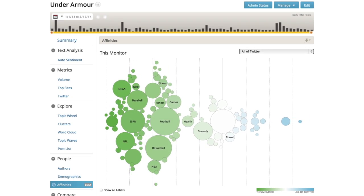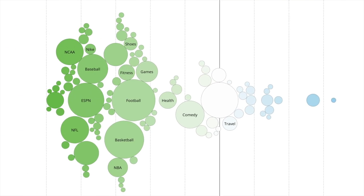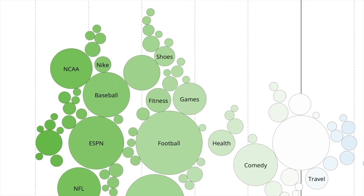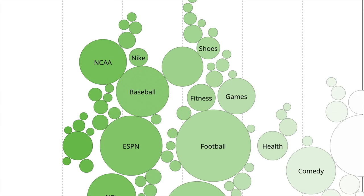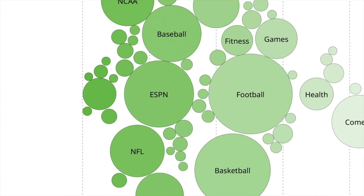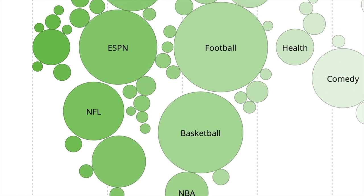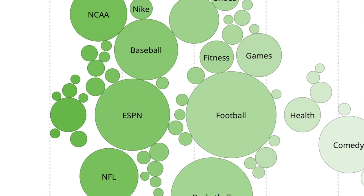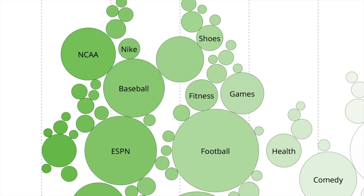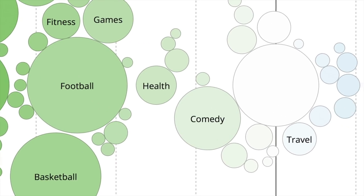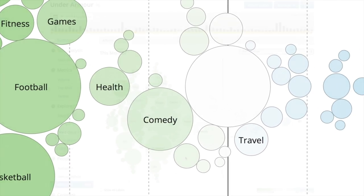What we see is a visualization where the interests of the people participating in this conversation are visualized as bubbles, where the size represents how prevalent that interest is overall, and its position represents how unique that is for this conversation.